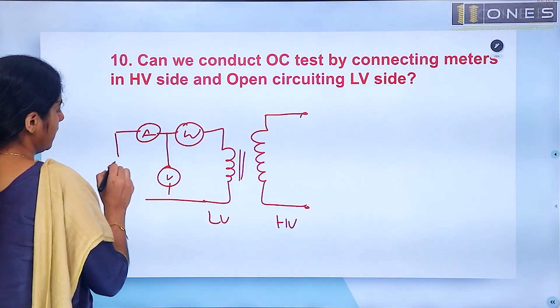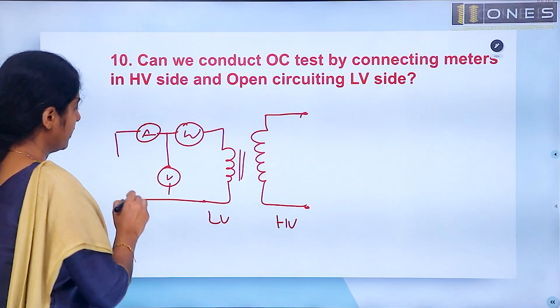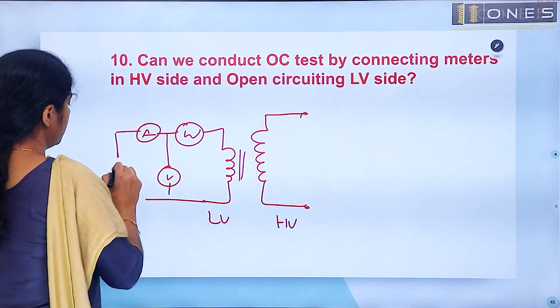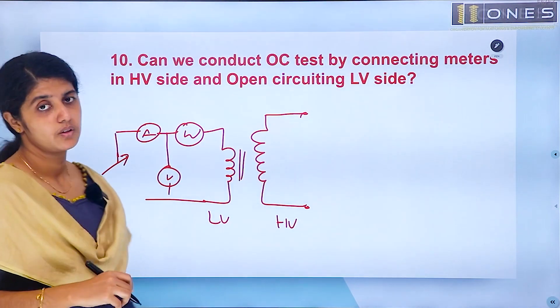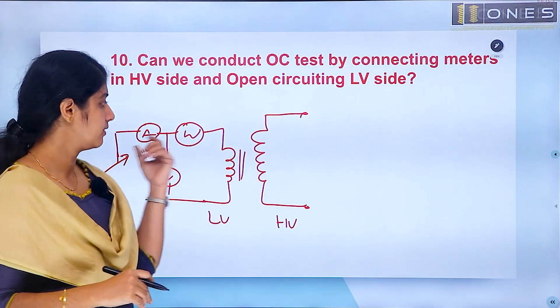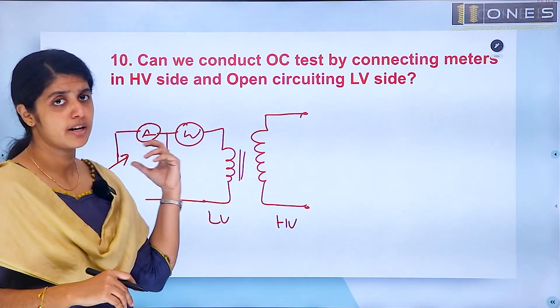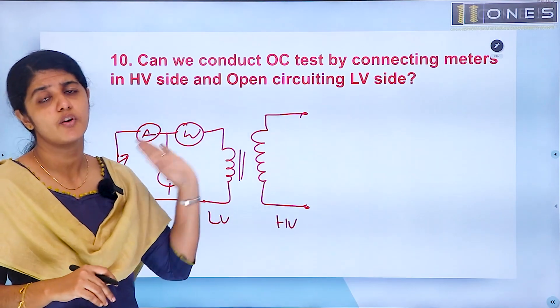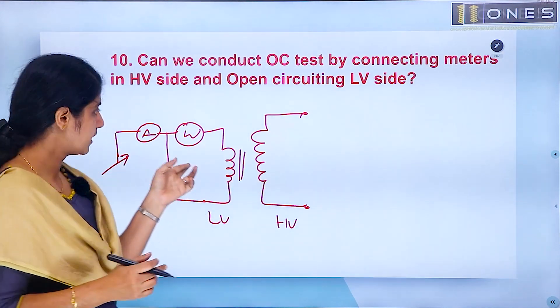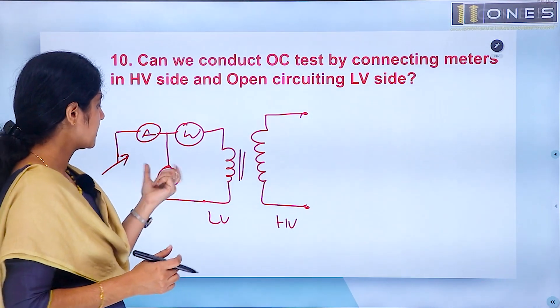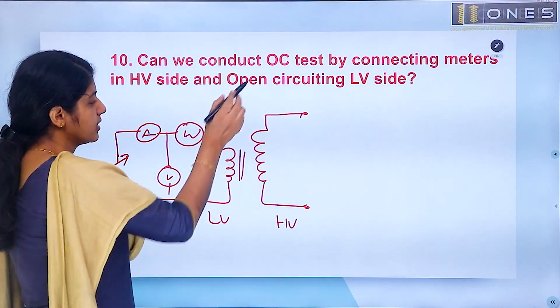Then there is an autotransformer providing variable voltage. After the autotransformer, the voltage varies, and we apply rated voltage for the O.C. test.